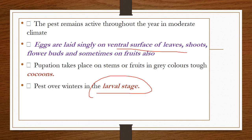The pest is active throughout the year in moderate climate. The eggs are laid singly on the ventral surface of the leaves, shoots, flower buds, and sometimes on fruits also. Pupation takes place in tough cocoons on stems or fruits. The pest overwinters in the larval stage, that is, it hibernates during the larval stage.